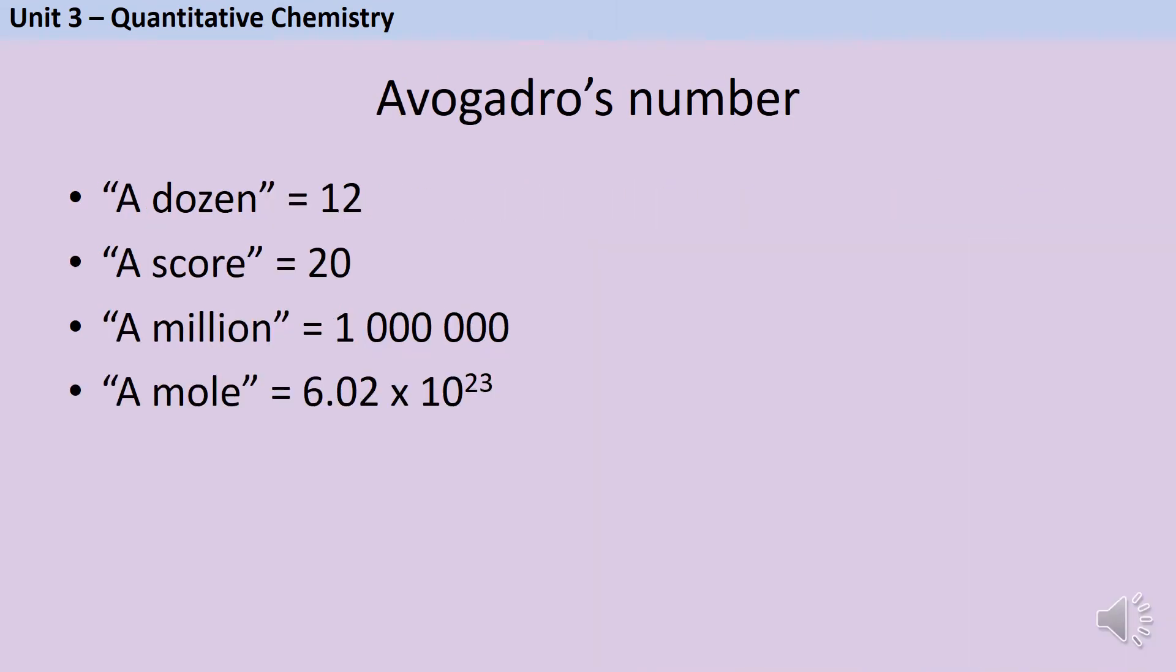In English there are lots of words that we use to represent a particular number, so a dozen always means 12, a score means 20, a million means one with six zeros after it. And when I as a chemist talk about a mole, I mean 6.02 times 10 to the 23 of a particular particle. That number is called Avogadro's number or sometimes Avogadro's constant, and we can use it to calculate exactly how many particles there are in a substance if I already know how many moles there are.